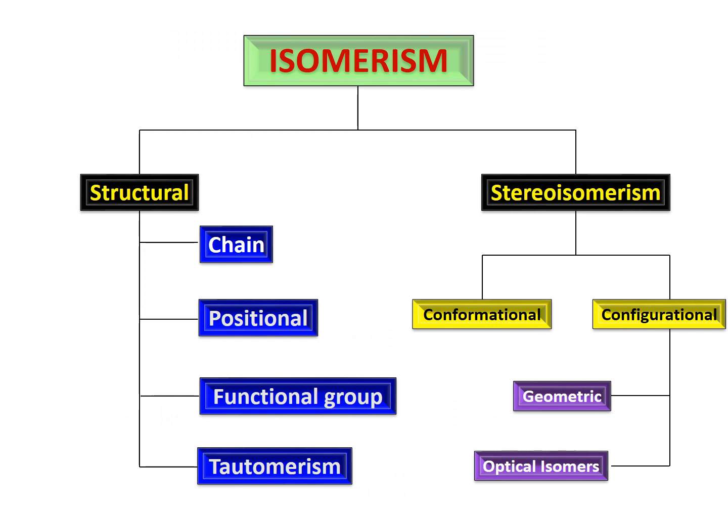Before going deeper into the topic, let's first look at isomerism. Isomerism is a phenomenon in which two molecules have the same molecular formula but may have differences in their structure or in the arrangement of atoms. The molecular formula is the same in all cases, but the molecules differ either structurally or in their stereochemistry.